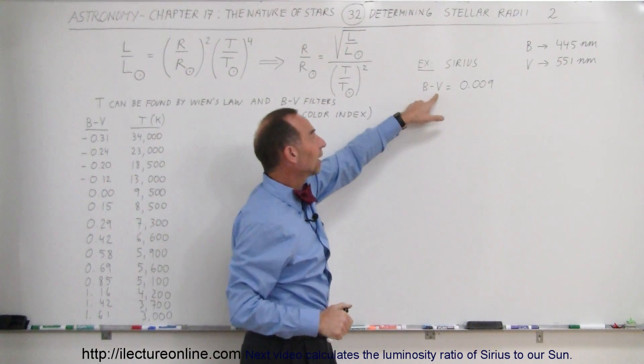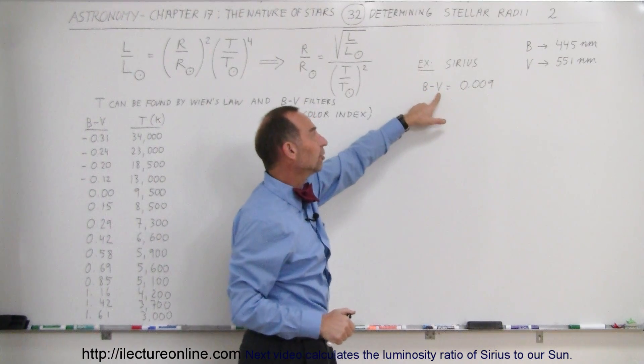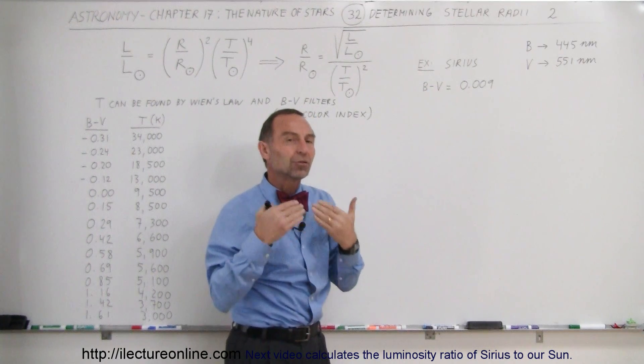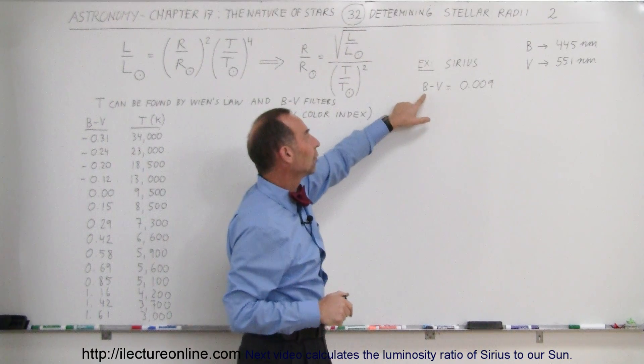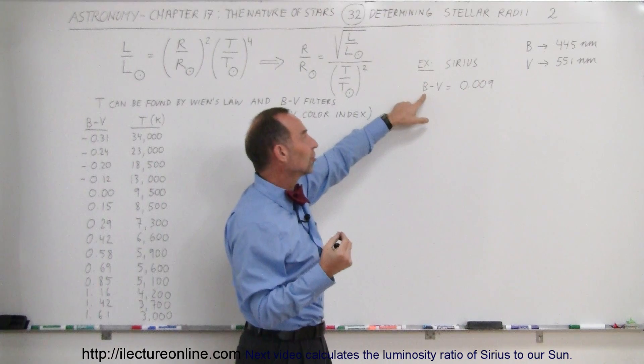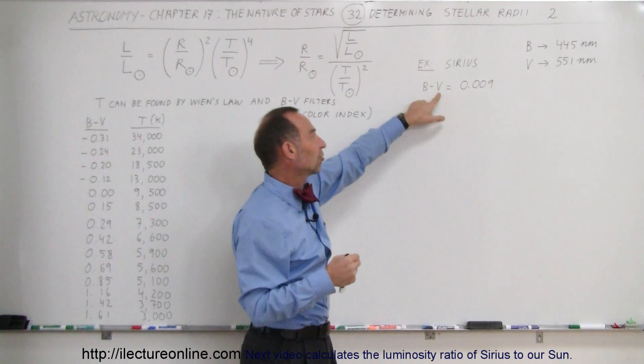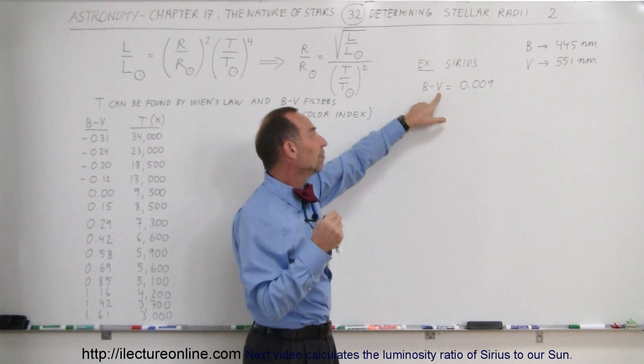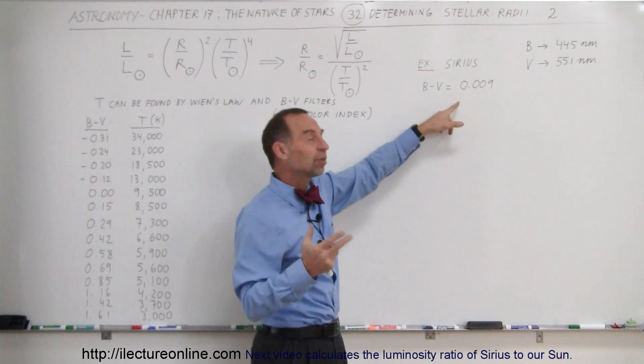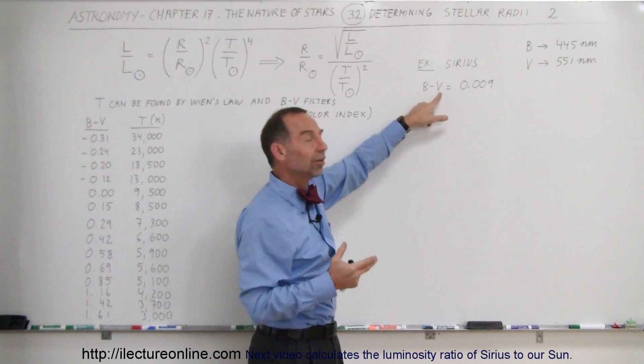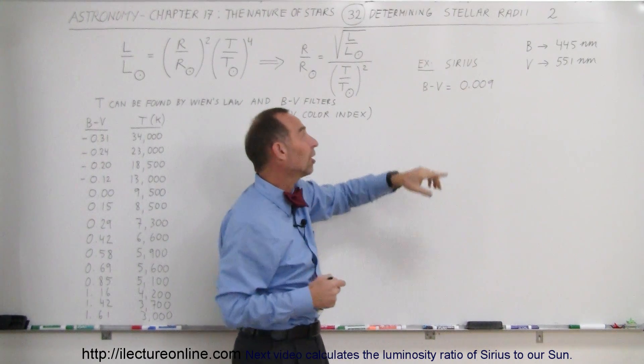Then we look at the light from Sirius with a V filter and we see how bright it appears through that filter. Then we subtract the magnitude of the one minus the magnitude of the other. We take the brightness factor with a blue filter and subtract from that the brightness factor with a visible light filter. If the number is negative, it appears brighter in the blue than it does in the rest of the visible light spectrum, so therefore it must be a very hot star.